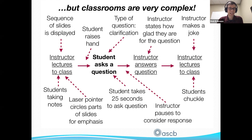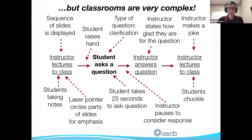We may have behaviors that in isolation are easy to think about, but they're always in the context of a thousand other things happening — things that follow, things that precede. The ordering matters, the overlap between things matters. If we're thinking about a student asking a question, that question could take on a variety of different types, and the instructor's answer could vary as well.